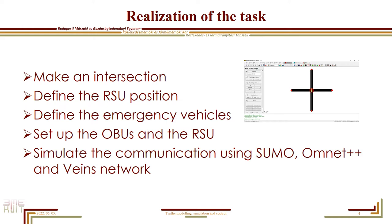In the homework, we had to set up a plan to realize the task. The first step was to make an intersection in the NetEdit tool, where we could choose the type of intersection, set the light program, and generate random routes for the vehicles. Then we selected the placement of the RSU, which in real life would be on a lamppost. All vehicles have the same type, except the emergency vehicle, which we defined as an ambulance type to differentiate it from the others.